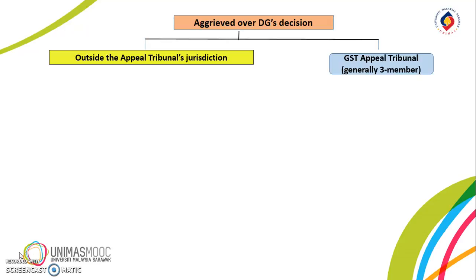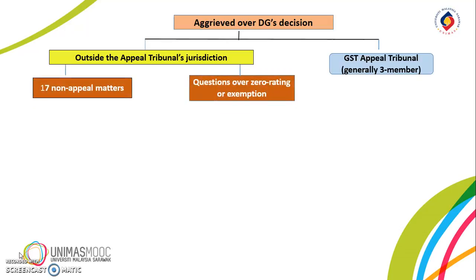The Tribunal has no jurisdiction on: (a) 17 specified matters, and (b) matters over zero rating and exemptions. Examples of the 17 non-appeal matters are those relating to a statutory restriction under the GST Act, refusal of registration, and offsetting tax against refund. Cases of supply of goods or services subjected to zero rate or exempted from GST shall be determined by the Minister. However, it is still possible for the person to seek the High Court's intervention.